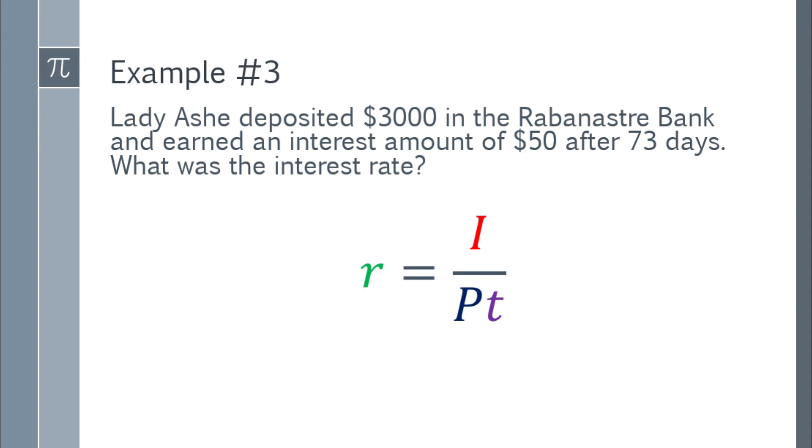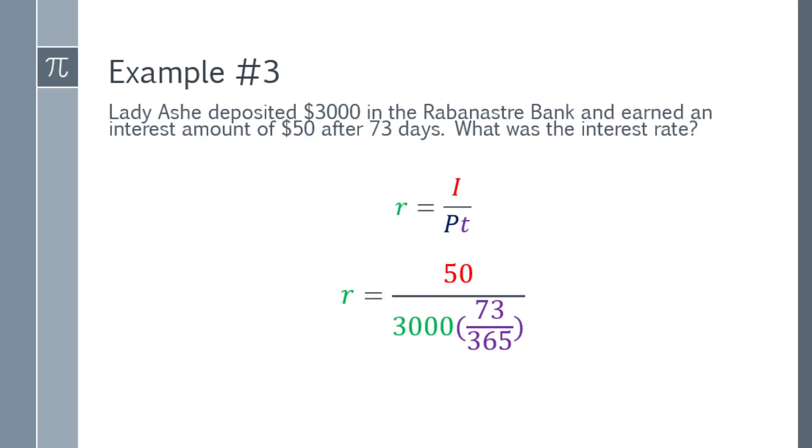Again, let's place the formula, R equals I over PT, and substitute na natin yung given. We have R equals 50 over the quantity 3,000 times 73 over 365.